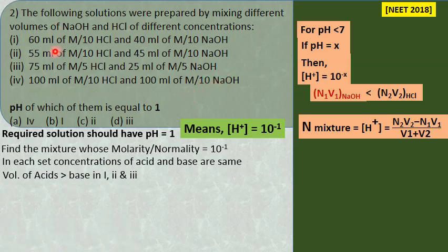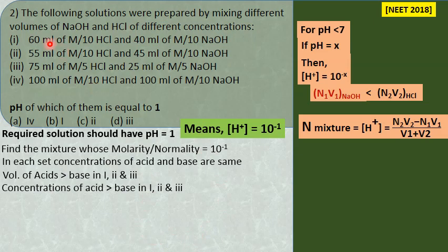In combinations 1, 2, and 3, the volume of acid is more. Concentration is same but acid volume is greater, meaning these are acidic mixtures. In combination 4, concentration is same and volume is same—when you mix equal concentrations of acid and base, it becomes a neutral solution. Since acid and bases are strong electrolytes, they completely neutralize to give salt and water, so combination 4 gives pH = 7 and can be eliminated.